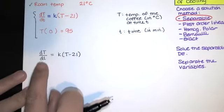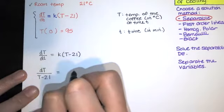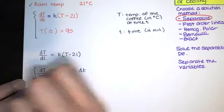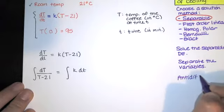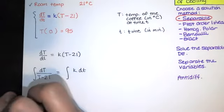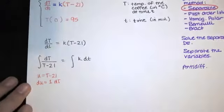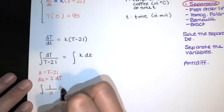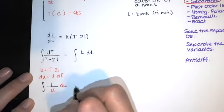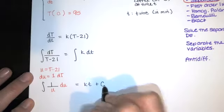Now k is a constant of proportionality. We want all the little t's on one side and all the big T's on the other, so we divide by T minus 21. Then we anti-differentiate both sides with respect to the appropriate variable. On the left side, a u-substitution is appropriate. Let u equal T minus 21, then du is just dt. This becomes 1 over u, and the dt in the numerator is just du. The right-hand side is the anti-derivative of k with respect to t, which is kt plus a constant.